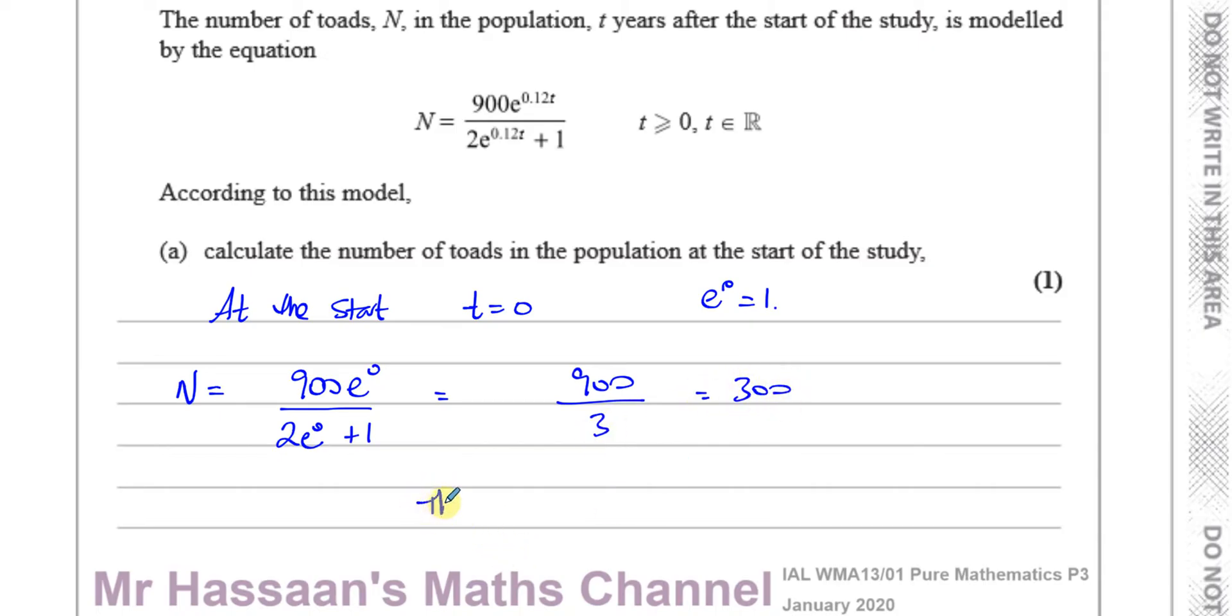So you can say there were 300 toads at the start. We could leave it like this, but it's more complete to write the sentence.